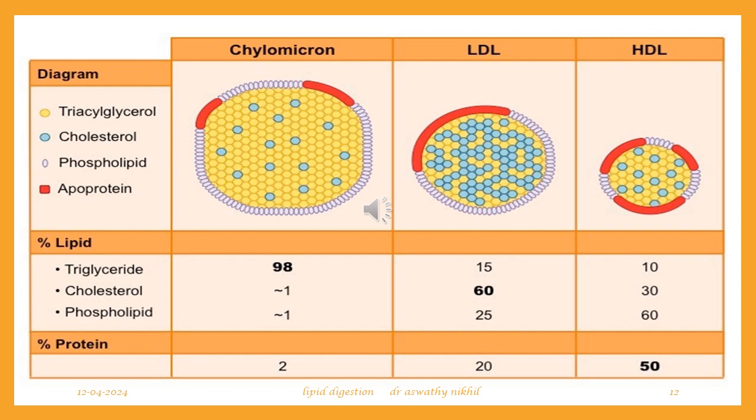This slide shows the structure of chylomicron, LDL, and HDL. The apoprotein present in chylomicrons and LDL is apoprotein B100, while the apoprotein present in HDL is apoprotein A1 and A2.